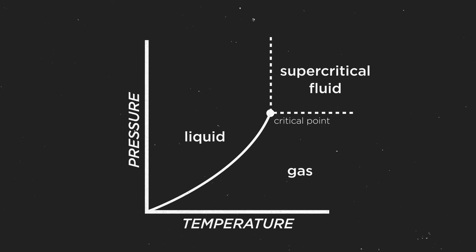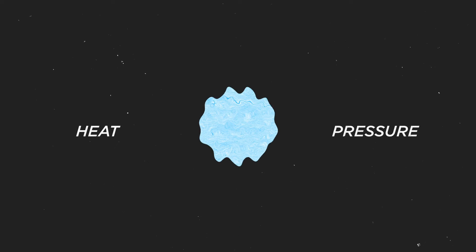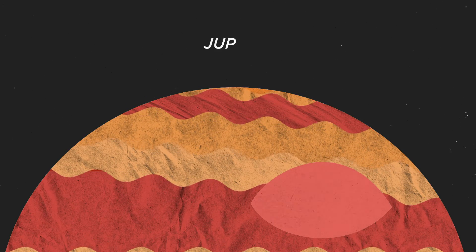And a supercritical fluid, badly explained, is basically a combination of the gas and liquid phases. There is so much heat and pressure, that both phases become indistinguishable. This is what we believe happens in the atmospheres of gas giants like Jupiter.